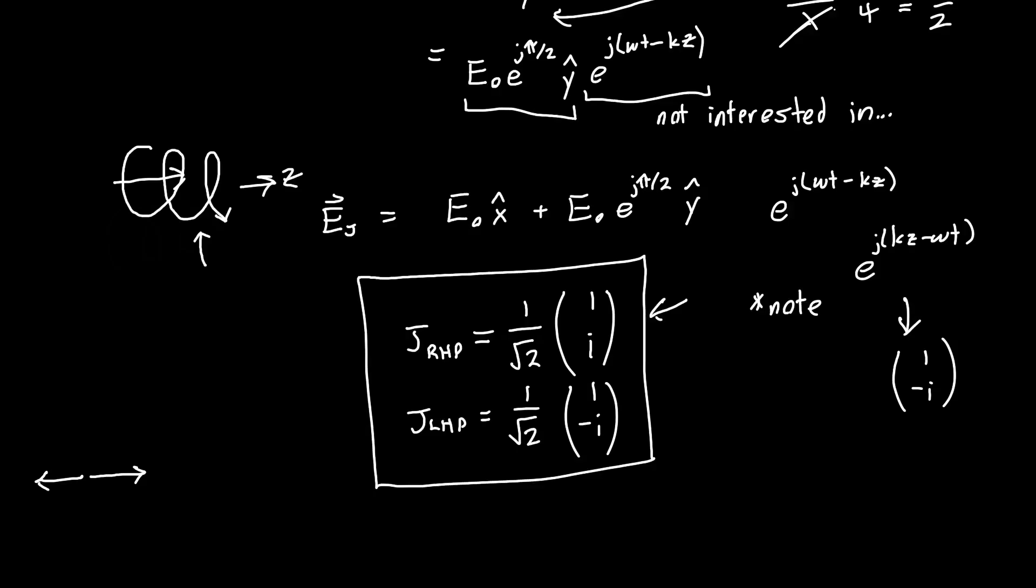But you might wonder, what if we hadn't shifted by a perfect lambda over four? What if we had shifted by a little bit less or a little bit more? And that's a perfectly reasonable question. And we'll answer that in the next video on elliptically polarized light. And you'll get the same exact thing if you instead had different amplitudes in front of this x and y, but we'll go over that in the future video.